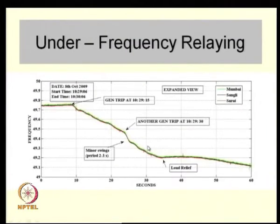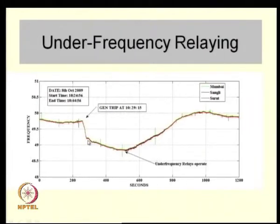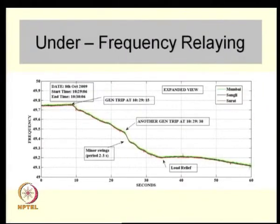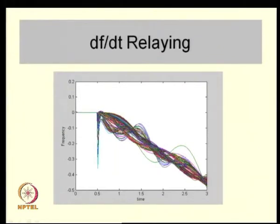Looking carefully at that event, there appear to be two generation trips and two load relief events. There are loads designed to trip when frequency falls, which is exactly what occurred, and after load tripping the frequency recovered. This is a kind of emergency control designed into the grid. A simulated response of a multi-machine system shows the rate-of-change-of-frequency at various buses after a generator trip, with the center-of-inertia frequency continuing to dip, showing the kind of information that can be used for quick control action.